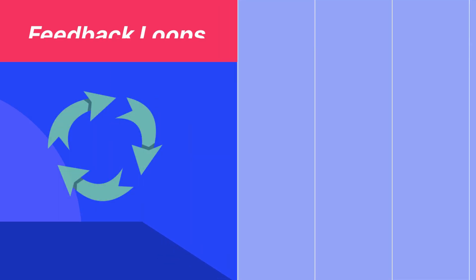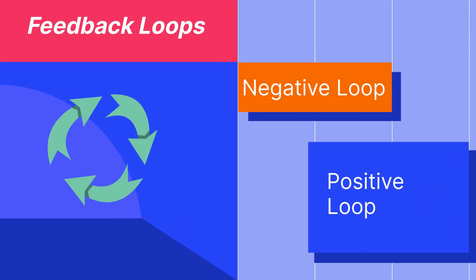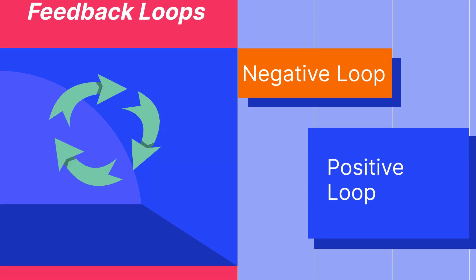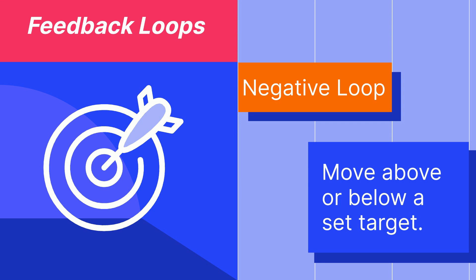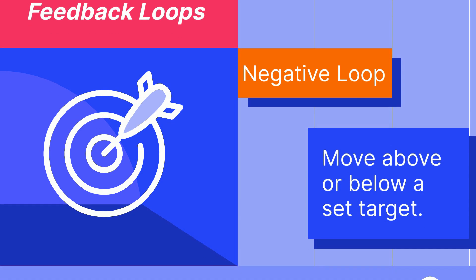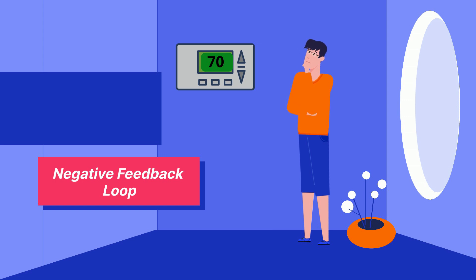Feedback loops are important in allowing living organisms to maintain homeostasis. With a negative feedback loop, you move above or below a set target. An example is your house thermostat. If it is set at 70 degrees Fahrenheit and the temperature gets above this, the air conditioner will turn on to cool the house. When it falls below 70 degrees it will turn off, and it will continue to repeat this process.